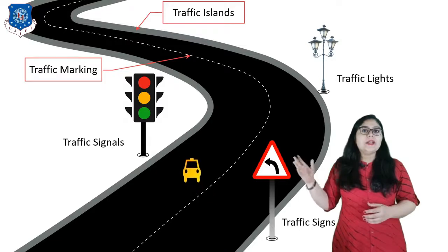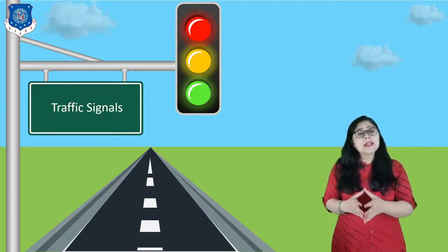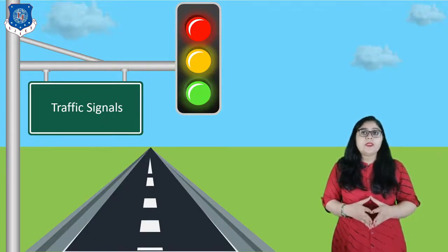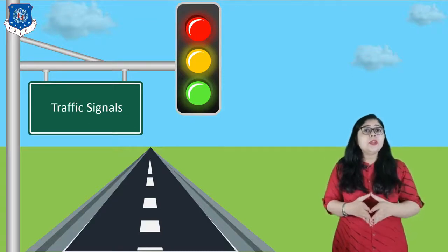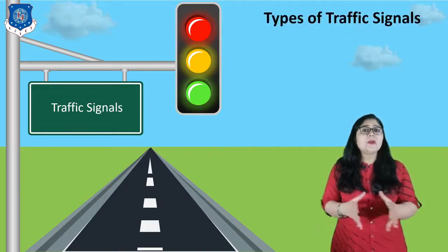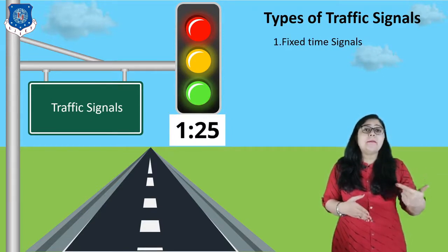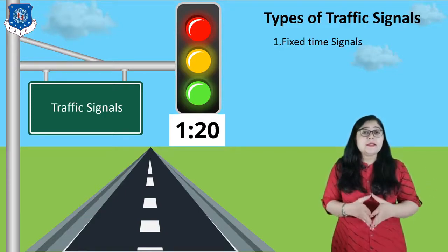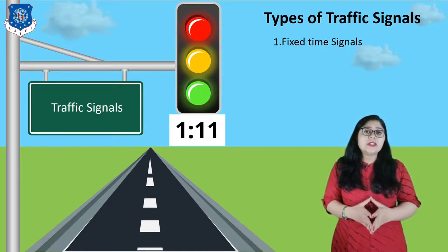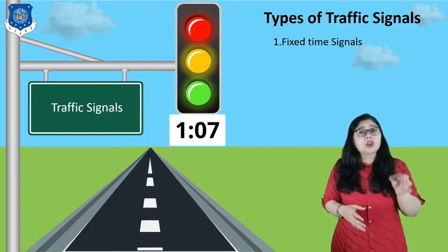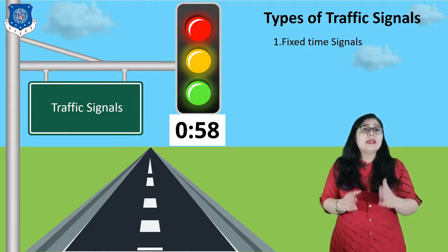Now let's discuss the next topic: traffic signals. A traffic signal is used as an instructing device that indicates the road user to act according to the displayed sign. Following the traffic signal ensures road safety, and these signals use a universal color code. There are various types: first is fixed time signals, which are set to repeat regularly a cycle of red, amber, yellow and green lights. Depending upon traffic intensities, the timing of each phase is predetermined. The drawback is the cycle goes on irrespective of whether there is traffic on any road or not.